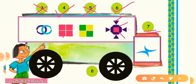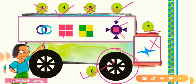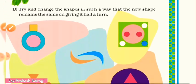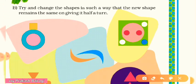In the seventh picture, it does not look the same in one fourth turn, so no tick. In half turn it also does not look the same, so put a cross. In the eighth picture — a circular wheel — it will definitely look the same in one fourth turn, so put a tick. In half turn it also looks the same, so no cross.